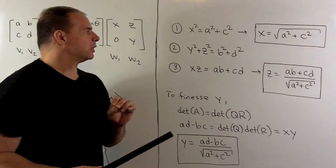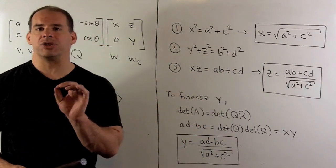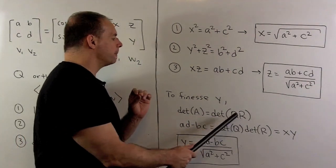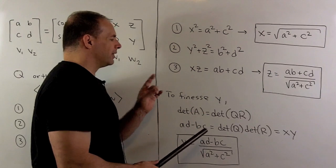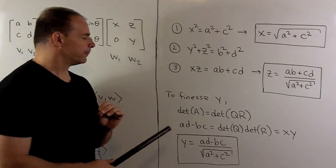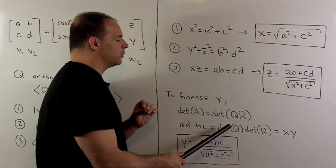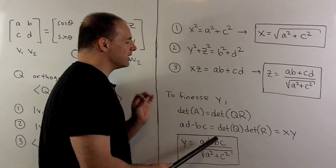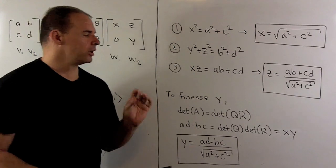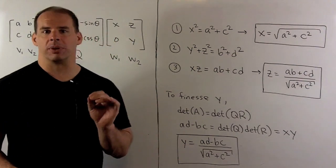To get Y, a slightly easier way is to use the determinant. If A equals Q times R, taking the determinant of both sides and applying the product rule, the determinant of A is AD minus BC. Since the determinant of Q equals 1, this equals the determinant of R, which is the product of the diagonal entries, X times Y. Moving X to the other side, Y equals (AD minus BC) divided by the square root of A squared plus C squared.